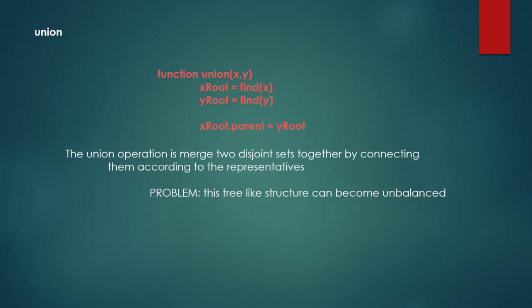The union operation takes X and Y, finds the root for X and the root for Y, and merges them together. So X's root's parent becomes Y's root. The union operation merges two disjoint sets together by connecting them according to the representatives.